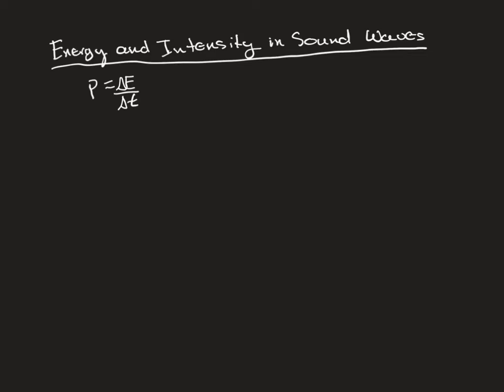So let's define intensity. Intensity, therefore, has a distance component, and that's actually hidden inside of area. So it's the area through which the sound waves are traveling. So we're going to say intensity is going to equal power divided by area. And so this is a surface area.